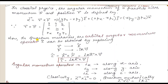Now we will talk about quantum mechanics — how we move to orbital angular momentum. We talked about angular momentum from classical physics, and now in quantum mechanics, R is our position and P is our momentum. We represent P as −iħ∇. So we replace both of these, and in quantum mechanics the orbital angular momentum becomes −iħ (r × ∇).